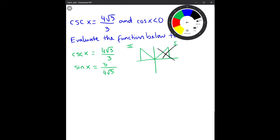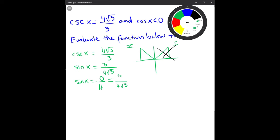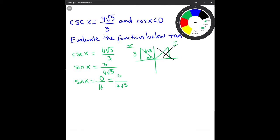Based on our information, sine of x equals 3 over 4√3. From prior knowledge, sine of x equals opposite over hypotenuse, so our opposite side is 3 and the hypotenuse is 4√3. To find tangent of x, we need to know the adjacent side.